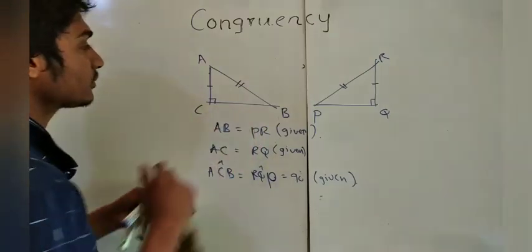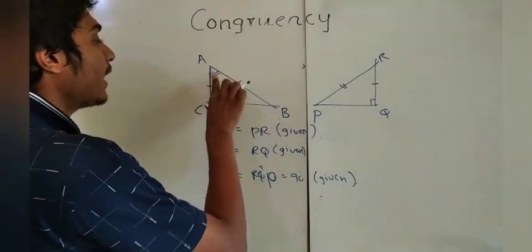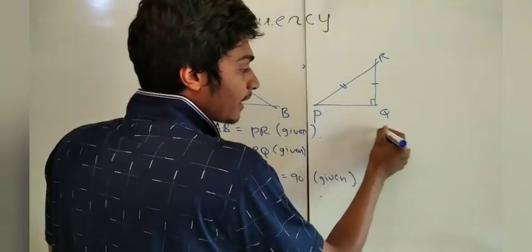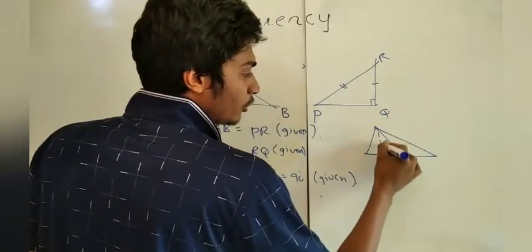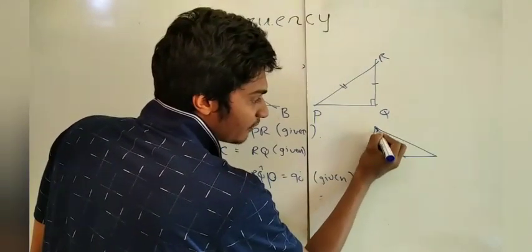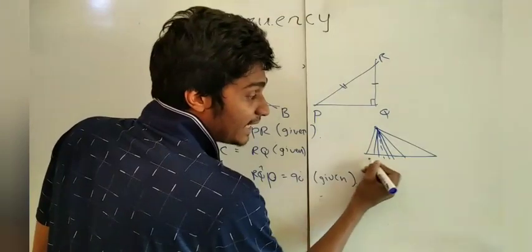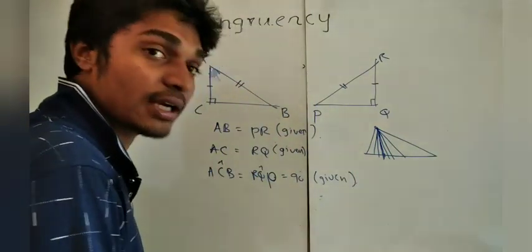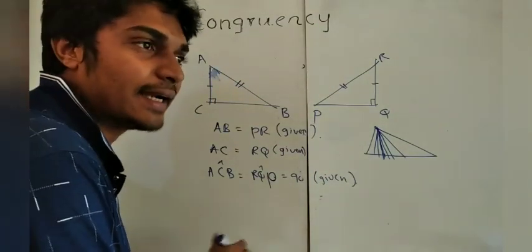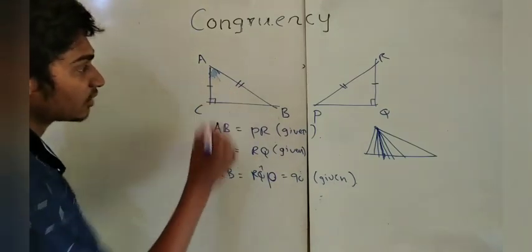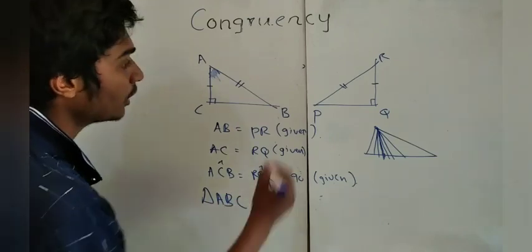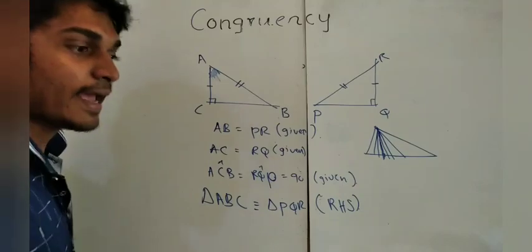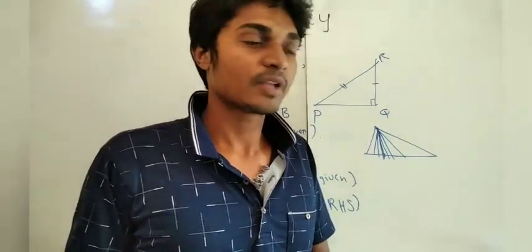Side-Angle-Side requires the angle to be included between the two given sides. Here the 90-degree angle is outside the two given sides, making it Side-Side-Angle. Normally SSA is invalid, but when the angle is specifically 90 degrees, you cannot draw any further alternative triangle — the right angle fixes the configuration. So SSA is valid only for right-angled triangles. Therefore triangle ABC is congruent to triangle PQR by RHS.